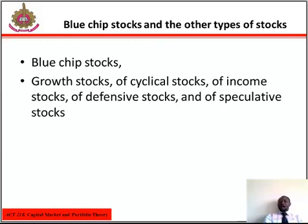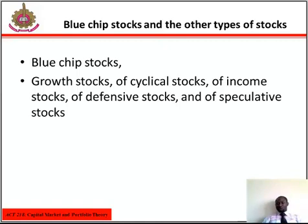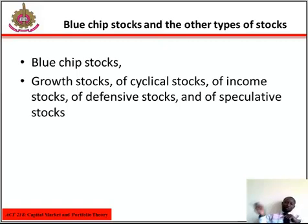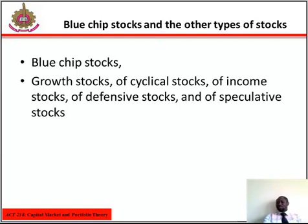Then we have defensive stocks. At the opposite pole from cyclical stocks are the so-called defensive stocks. Defensive stocks are shares of a company which is likely to do better than average from an earnings and dividend point of view in a period of deteriorating business cycle. If a recession is anticipated, a growing interest tends to develop in certain recession-resistant companies. Utility stocks are generally regarded as defensive since their slow but steady growth rate tends to hold up in recession years as well as in boom years. They are however very sensitive to interest rate changes — they fall in price if interest rates rise sharply, and increase in price if interest rates decline.